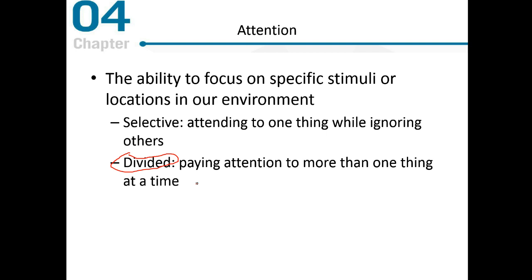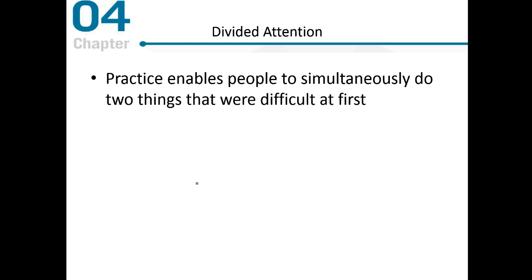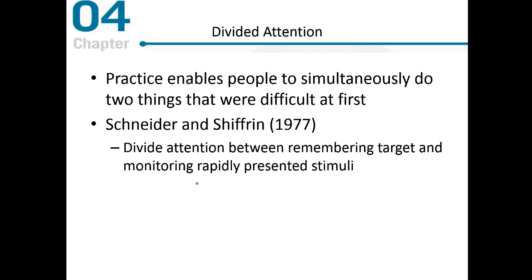We are going to spend most of our time in this lecture talking about divided attention, and the question is, can we attend to more than one thing at a time? There's some research showing that if we practice enough, we can simultaneously do two things at the same time that initially were very difficult. As research evidence, Schneider and Schifrin did a study in 1977 where they looked at people's ability to divide their attention between remembering a target and monitoring rapidly presenting stimuli.